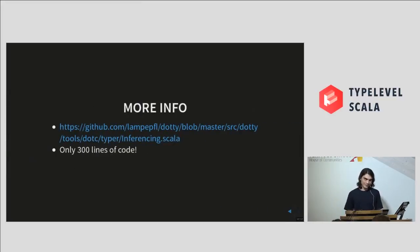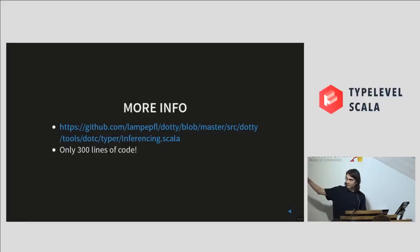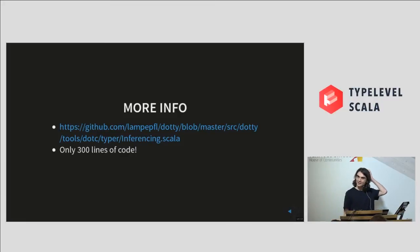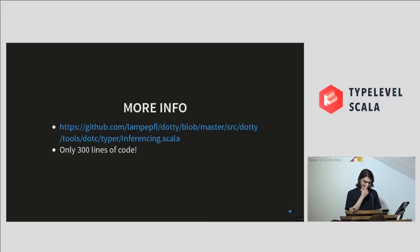And that's it for type parameters in Dotty. If you're curious, you can look at the code — it's about 300 lines of code, compared to I don't know how many thousands of lines in ScalaC. It's crazy. Please have a look.